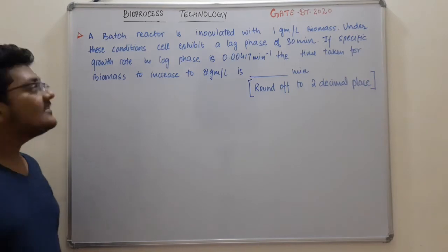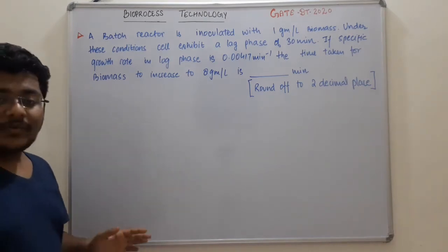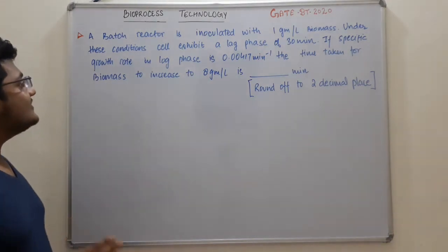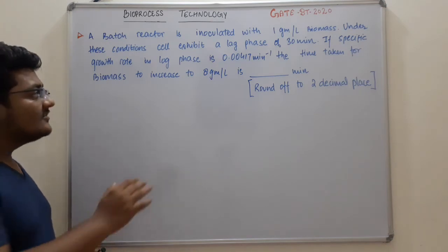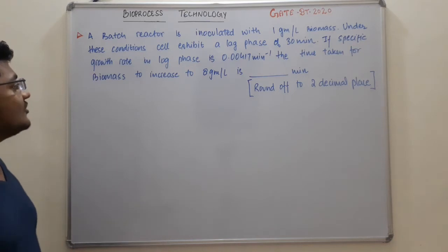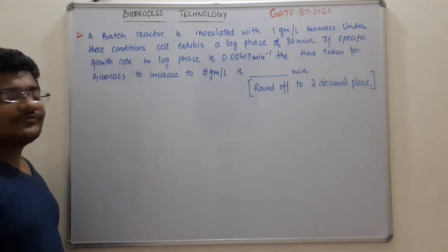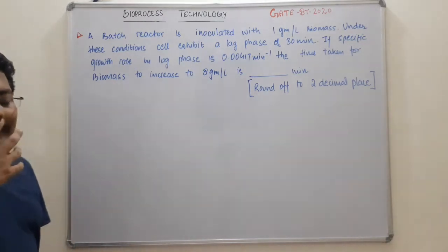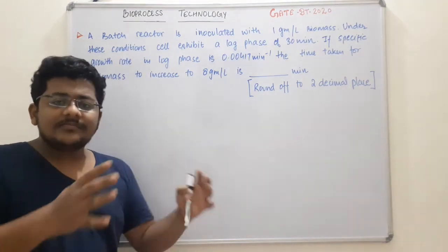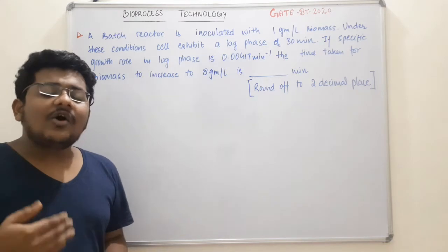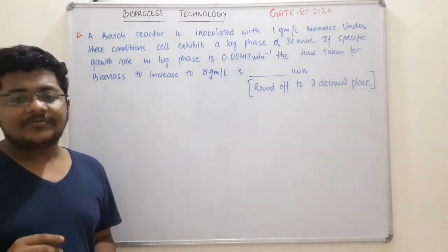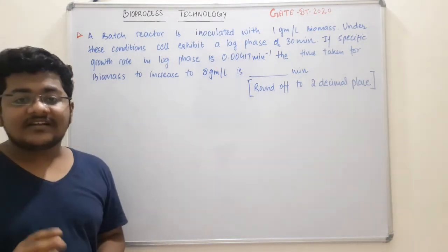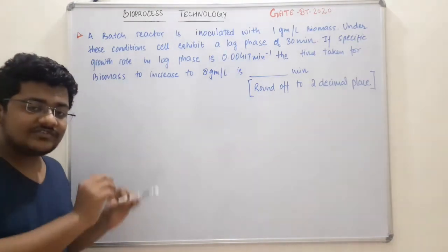This is the first numerical. It says that a batch reactor is inoculated with 1 gram per liter biomass. Under these conditions the cells exhibit a lag phase of 30 minutes. The specific growth rate in the log phase is 0.00417 per minute. The question asks for the time taken for the biomass to increase to 8 grams per liter. We have the initial biomass of 1 g/L, the final biomass target of 8 g/L, the specific growth rate, and the lag time of 30 minutes.